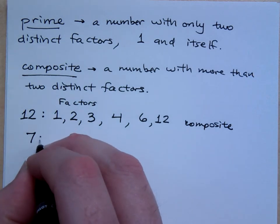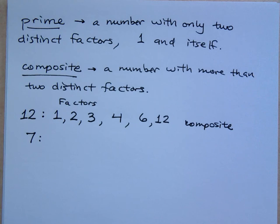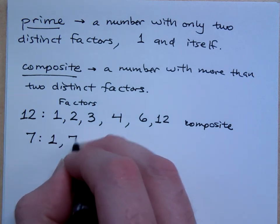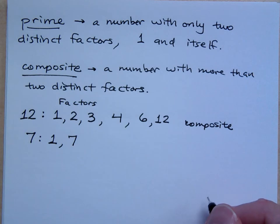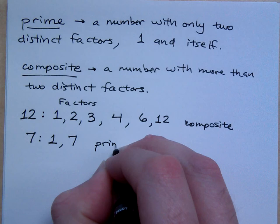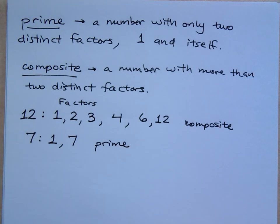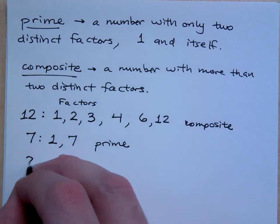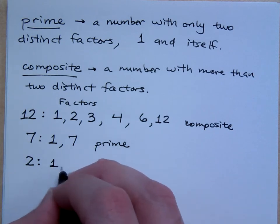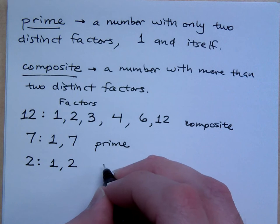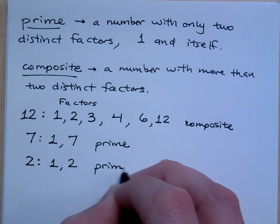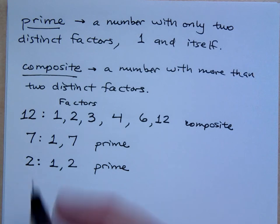What about the number seven? What are its factors? Anything other than one and seven? No, so that makes seven what? Seven is a prime number. How about two? What are the factors of two? One and two. So is two prime or composite?